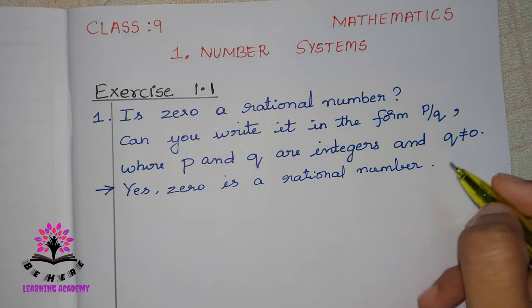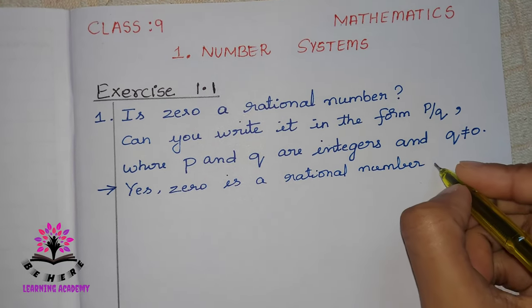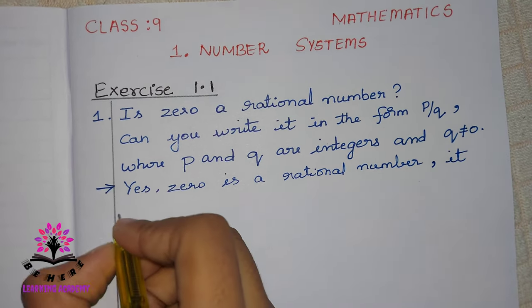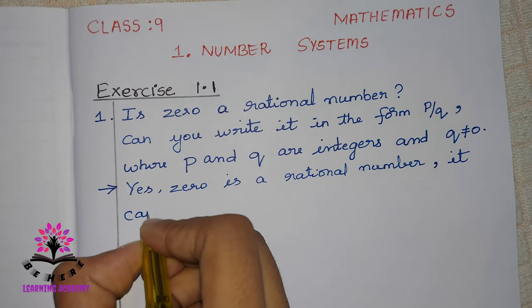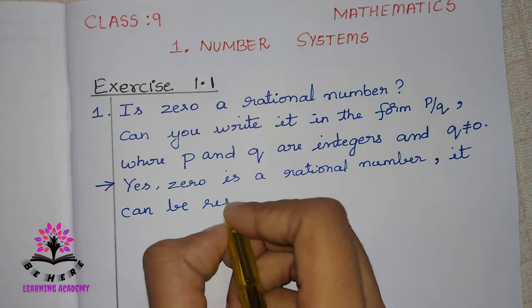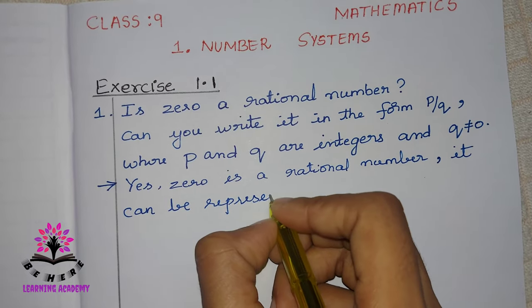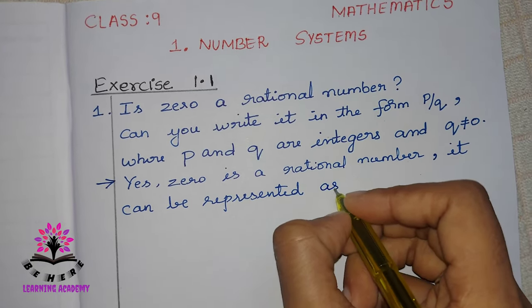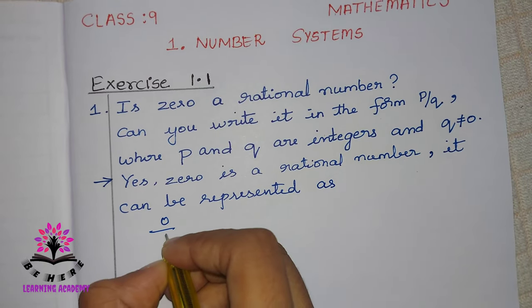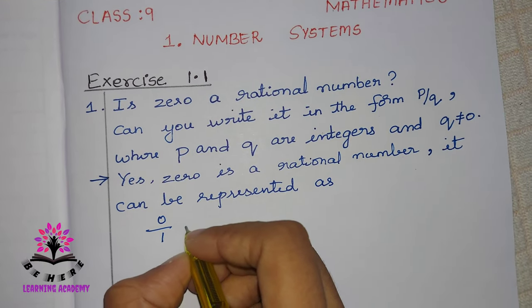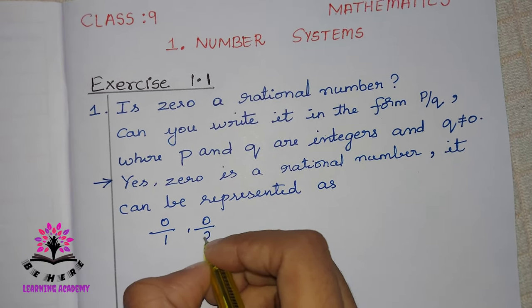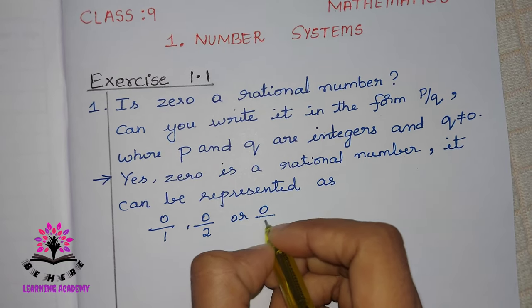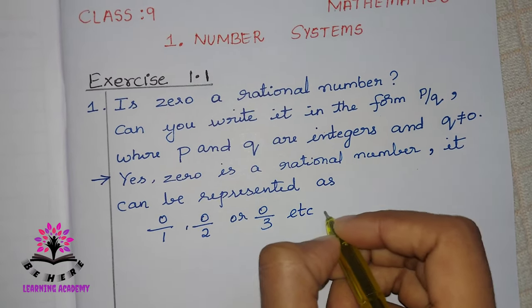Because we can write 0 in the form p by q. It can be represented as 0 by 1, 0 by 2, or 0 by 3, etc.